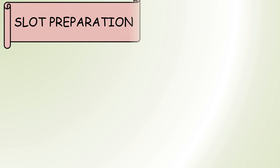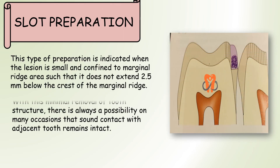Slot preparation is indicated when the lesion is very small and confined to the marginal ridge area such that it does not extend 2.5 millimeters below the crest of the marginal ridge. Since the contact area between the teeth is intact, we make a small slot in the marginal ridge area and fill it up, making this a minimal tooth preparation technique.